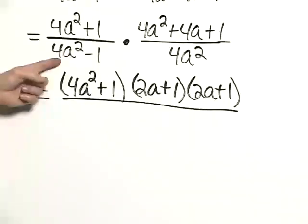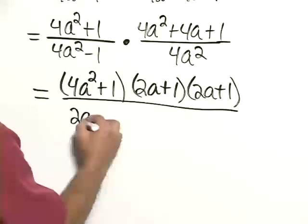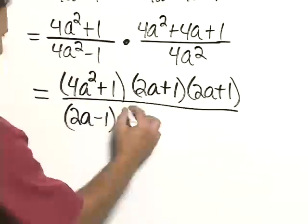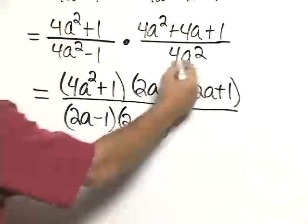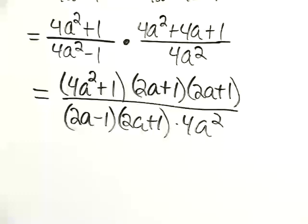In the denominator, 4a squared minus 1 is the difference of two squares. It factors as 2a minus 1 times 2a plus 1. 4a squared we leave as is.